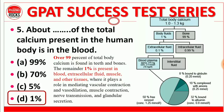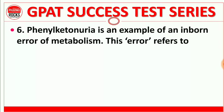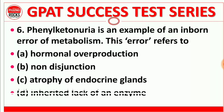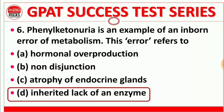Question number 6: Phenylketonuria is an example of an inborn error of metabolism. This error refers to hormonal overproduction, non-disjunction, atrophy of endocrine glands, or inherited lack of an enzyme? The right answer is inherited lack of an enzyme. Phenylketonuria is an example of an inborn error of metabolism, and these errors refer to an inherited lack of an enzyme.